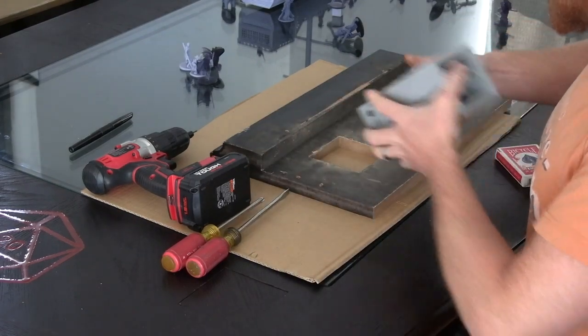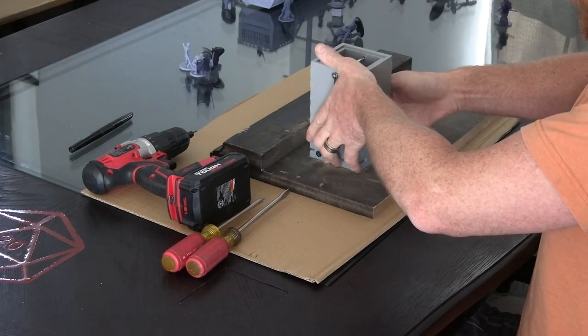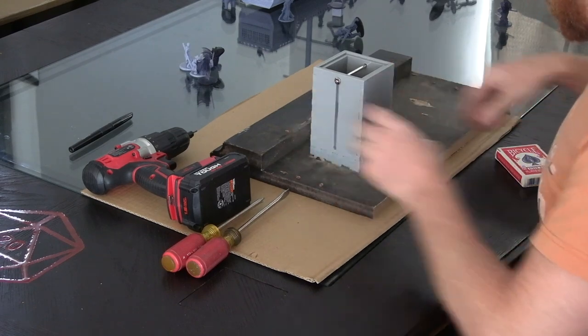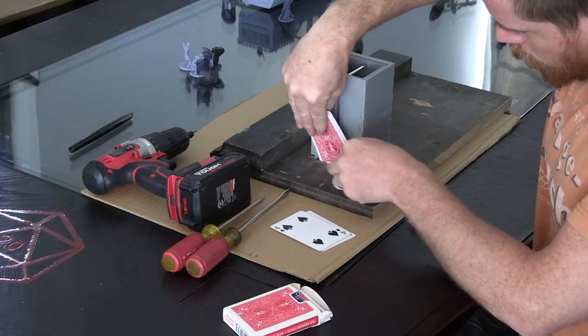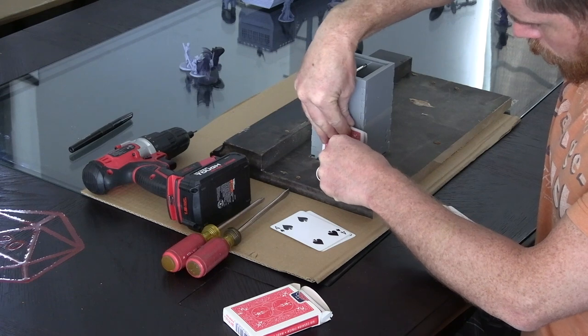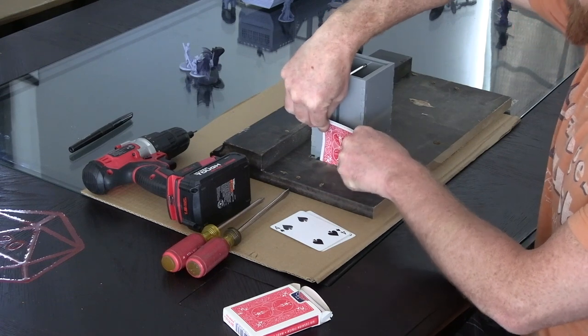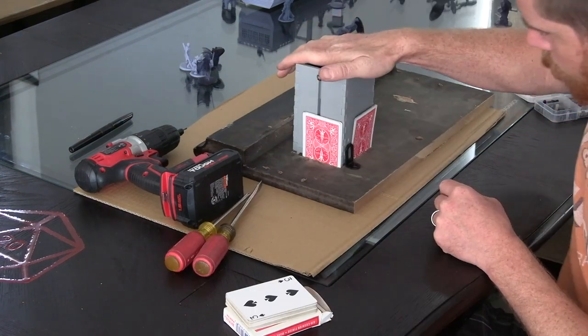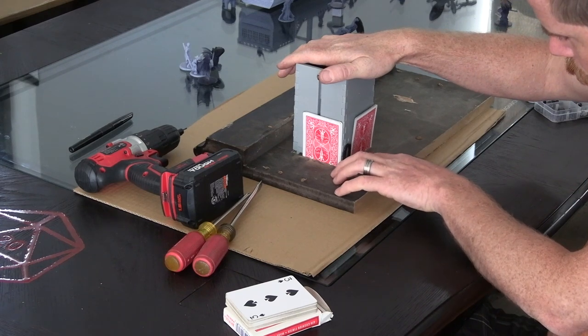You're going to want to take that table you cut the hole into and flip it completely upside down. If you're just working on a leaf like I am, this is going to make this much easier. Using the playing cards, you're going to want to shim all four sides of the dice tower, making sure to put an equal number of cards in every side and making sure that they're fit snugly so that nothing can move around.